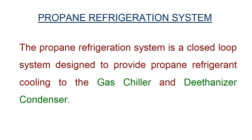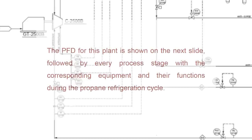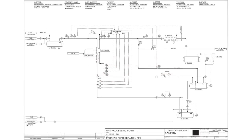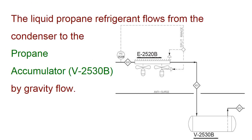The propane refrigeration system is a closed loop system designed to provide propane refrigerant fluid into the gas chiller and deethanizer condenser. The process flow for this plant is shown on the next slide, followed by every process stage with the corresponding equipment and their functions during the propane refrigeration cycle. The liquid propane refrigerant flows from the liquid receiver to the propane accumulator, vessel 2530B, by gravity flow.